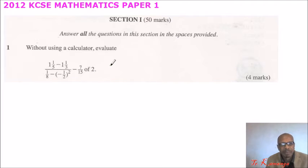So we can start by writing this into improper fractions. So we say 5 times 1 is 5 plus 1. You will be able to get 6 over 5. You minus, this is 3 times 1, is 3 plus 1. You get 4 over 3.